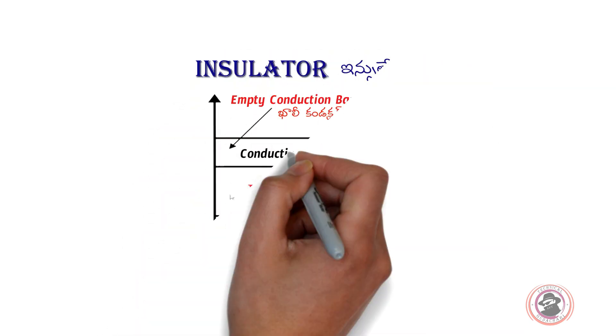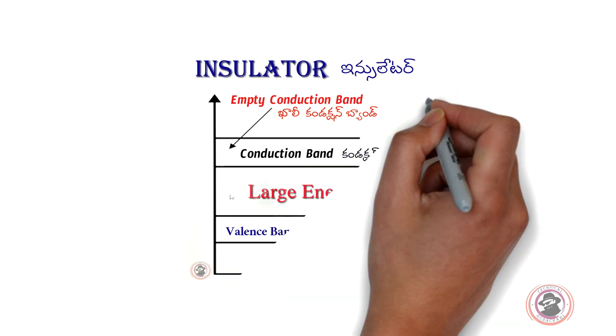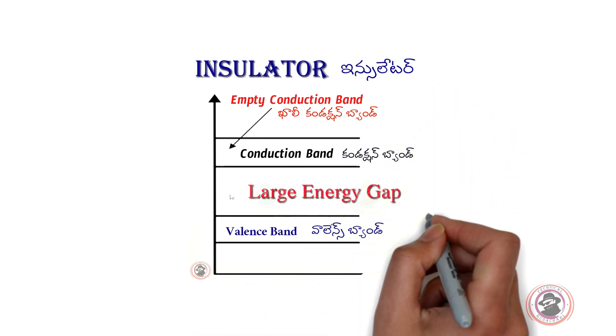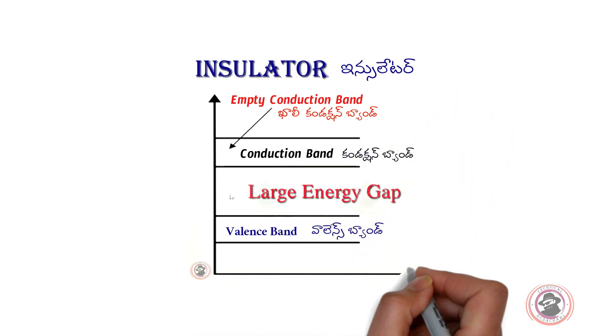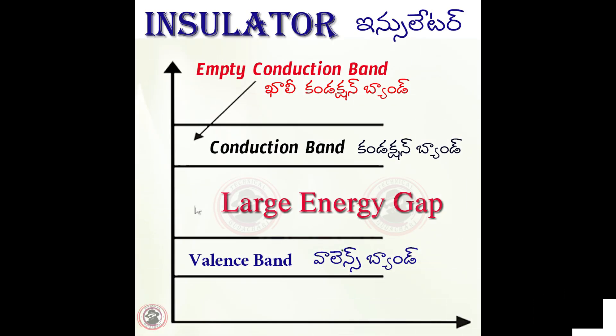The insulator band diagram has a valence band and a conduction band. Between the valence band and the conduction band, there is a large energy gap.